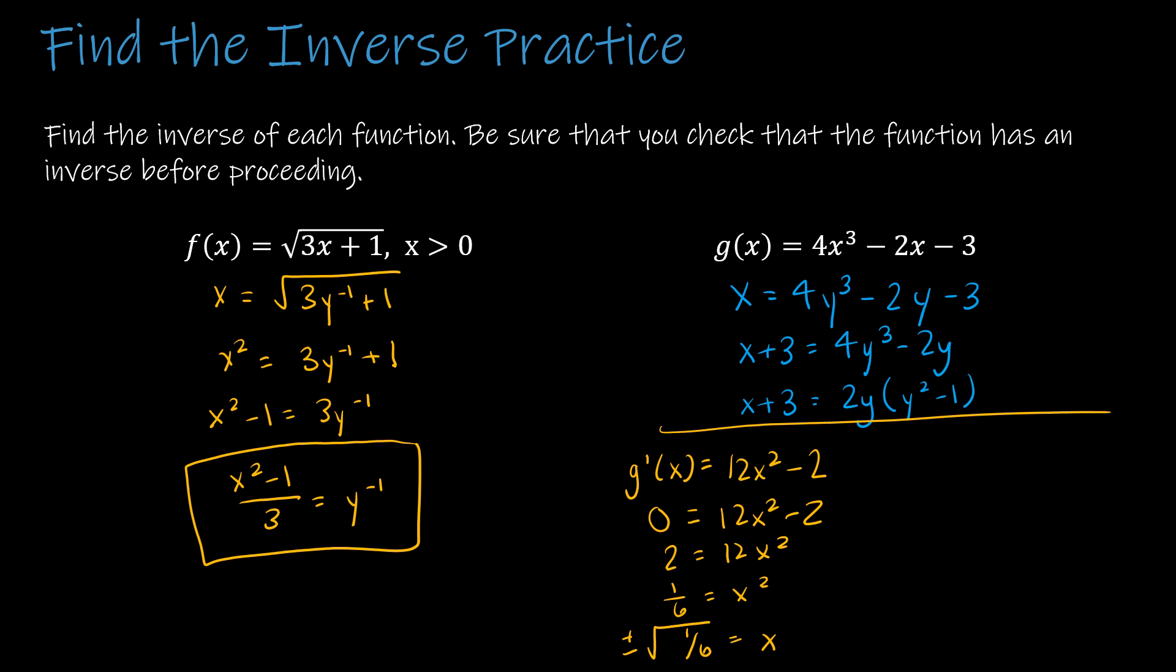So we can see that this is a real number - two real numbers, in fact. So if I were to create my intervals from negative infinity to -√(1/6), -√(1/6) to +√(1/6), and +√(1/6) to infinity, if I plug in a number in each interval, I do get plus, minus, plus. So we can see that this is not monotonic and an inverse does not exist.